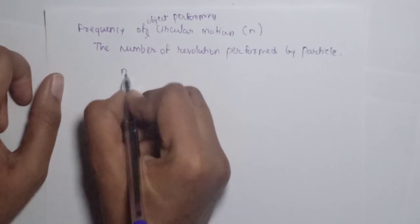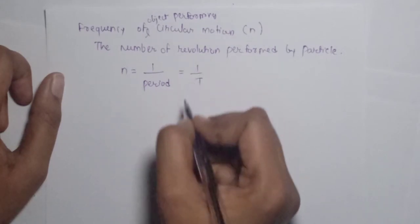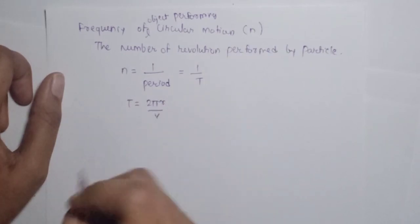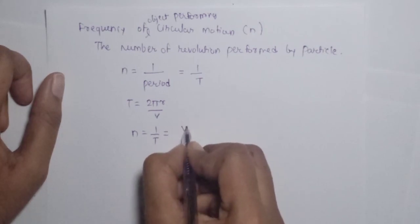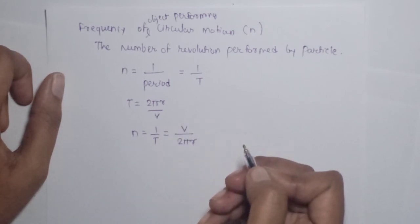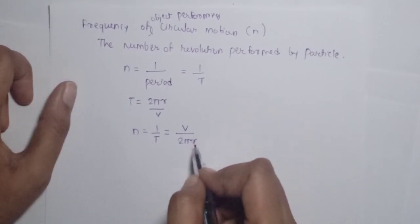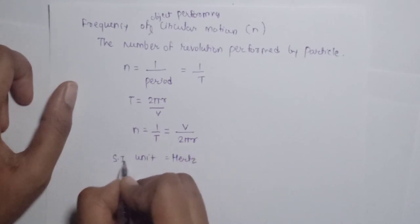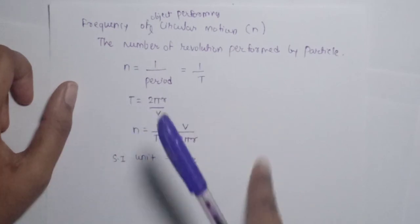The formula for frequency is: n = 1/T. Since T = 2πr/v, substituting gives: n = v / (2πr). The SI unit of frequency is hertz (Hz), corresponding to cycles per second.